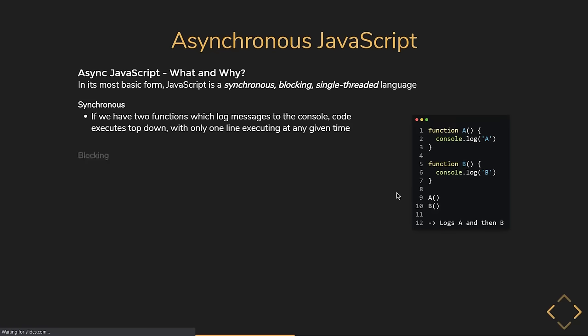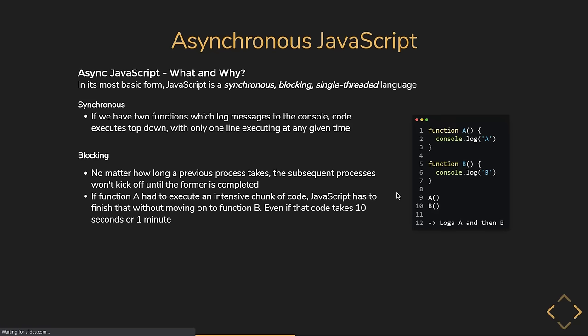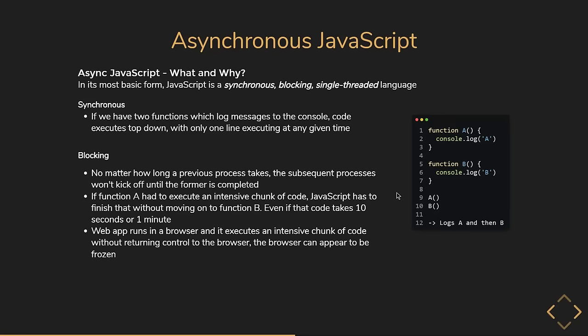JavaScript is blocking, which is because of its synchronous nature. No matter how long a previous process takes, the subsequent process won't kick off until the former is completed. If function A has to execute an intensive chunk of code, JavaScript has to finish that task without moving on to function B, even if it takes 10 seconds or one minute. When a web app runs in a browser and executes an intensive chunk of code without returning control to the browser, the browser can appear frozen — this is called blocking.